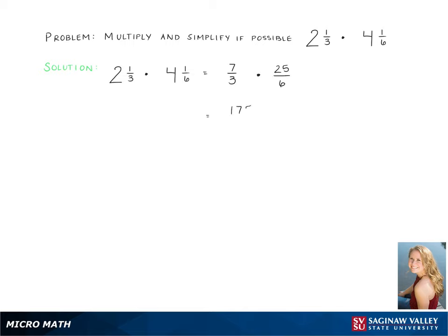Now we can multiply straight across. We do not need the same denominator. So the top becomes 175 and the denominator becomes 18. Now we're going to perform long division to turn this improper fraction into a mixed number.